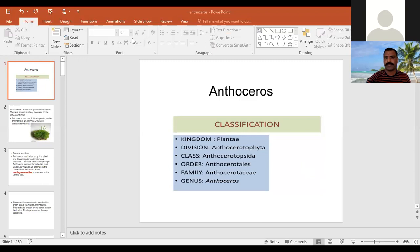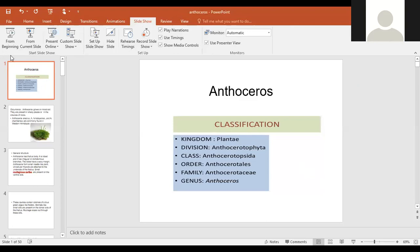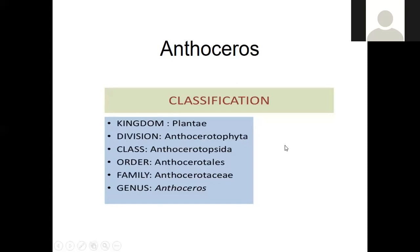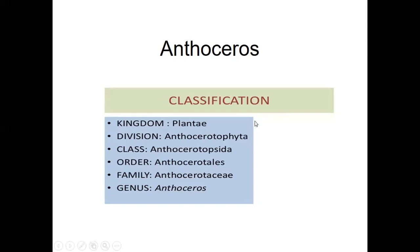I'll start sharing the screen. I hope you can see the slide. So we are starting with the type study which is called Anthoceros, and we'll go with the classification. As Marchantia belongs to the bryophyte, even Anthoceros also belongs to the bryophyte, under the subdivision called Anthocerotophyta. It belongs to the class Anthocerotopsida, whereas Marchantia belonged to the class Hepaticopsida. The order is Anthocerotales, family Anthocerotaceae, and the genus Anthoceros.